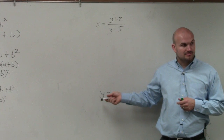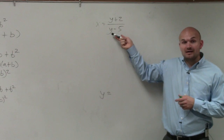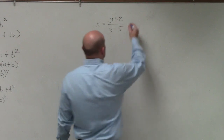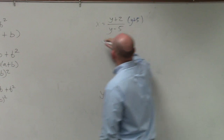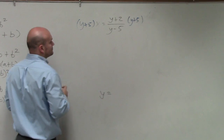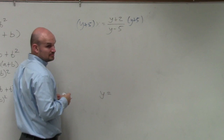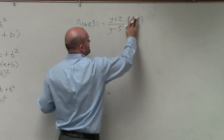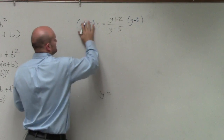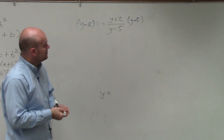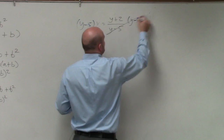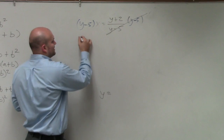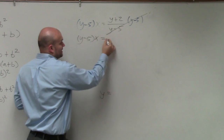Is y in the denominator of a fraction? No. So we need to get rid of the y that's in the denominator. What do we need to do to get rid of that y in the denominator? Multiply by y minus 5 on both sides. Whatever you do on one side, you have to do on the other side. So y minus 5 divided by y minus 5 just gives you 1.